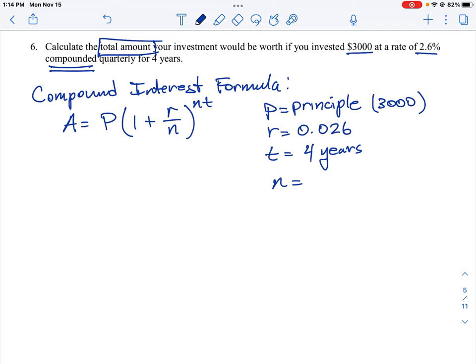So n is referring to the number of compounding periods in a year. Sometimes you compound these investments daily, which means 365 days. Quarterly means that we're going to compound it four times a year, so the number four is what n is. You could do it monthly, which means it happens 12 times a year, or weekly, which means it would happen 52 times in a year.